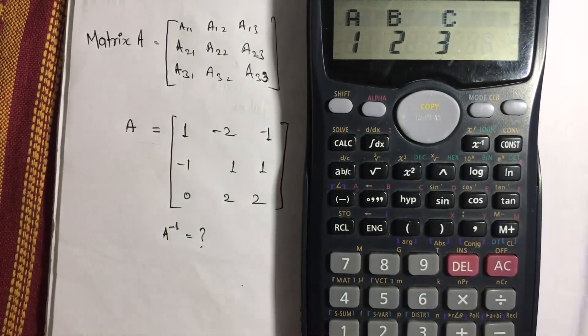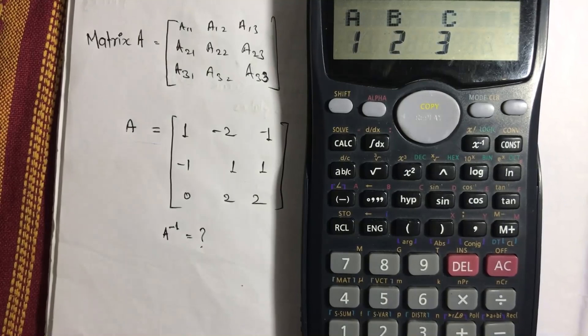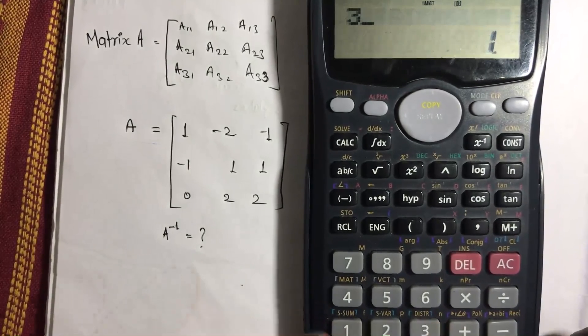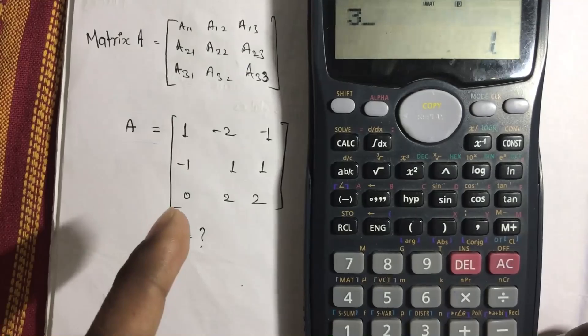So to do that, just go to dim, one dimension. Now here let us take it as matrix A, so one again. And here let's take it as 3 into 3 matrix, an example as this one, A matrix over here.